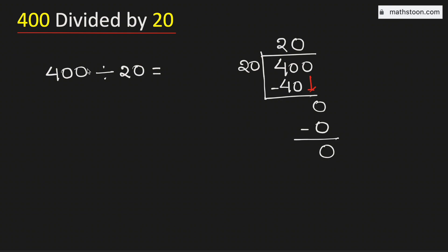Therefore, 400 divided by 20 is equal to 20. And this is our final answer.